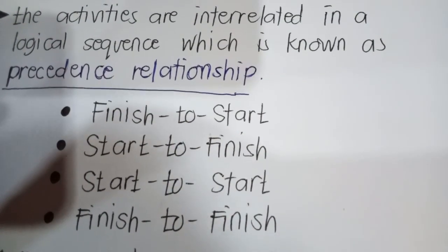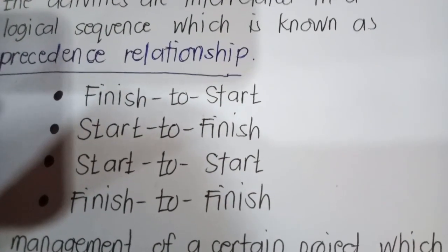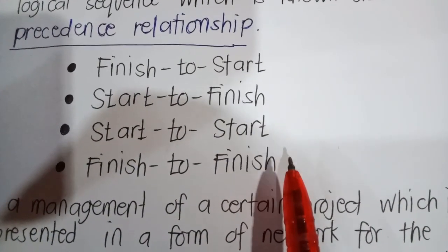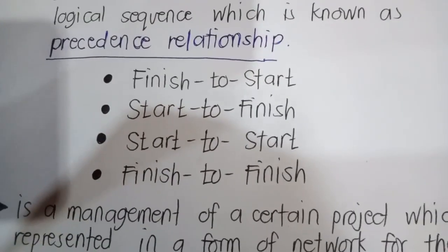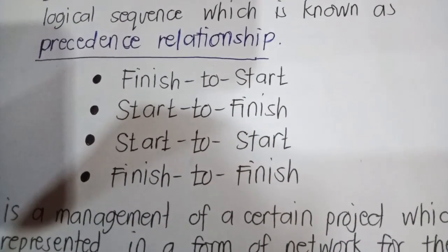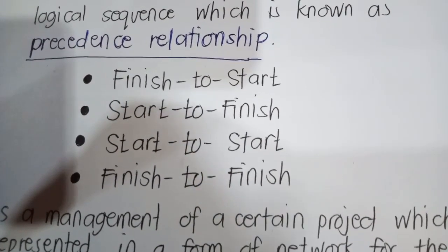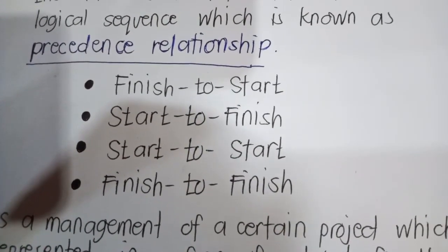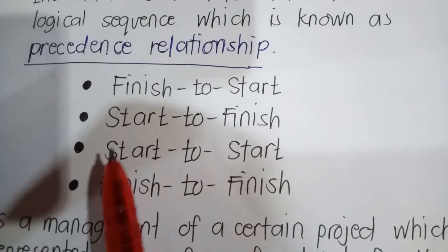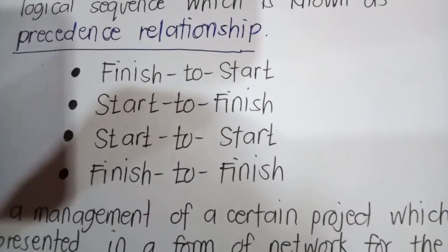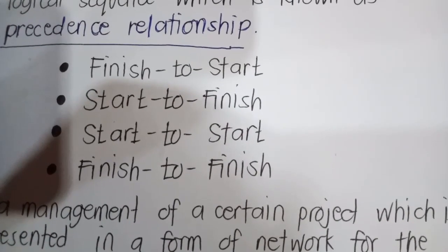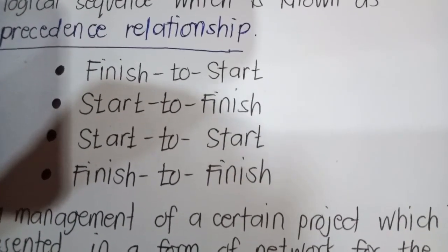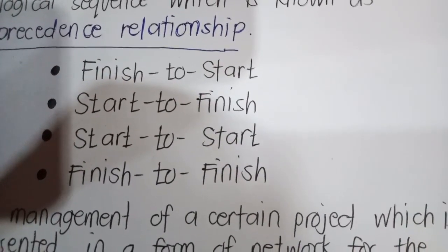And finally, the last method is finish-to-finish, which means that activity A must finish first before activity B can finish. For example, assume you are cooking dinner and you want the turkey to finish cooking before the potatoes. Activity A is 'cook the turkey' and activity B is 'cook potatoes.' The finish-to-finish relationship says that the turkey must finish cooking (activity A) before the potatoes finish cooking (activity B). This relationship is based on end times — they can each start whenever they need to, as long as they finish in this order.